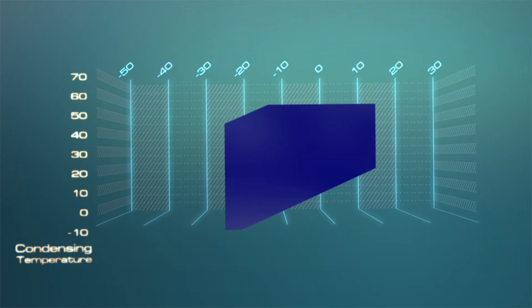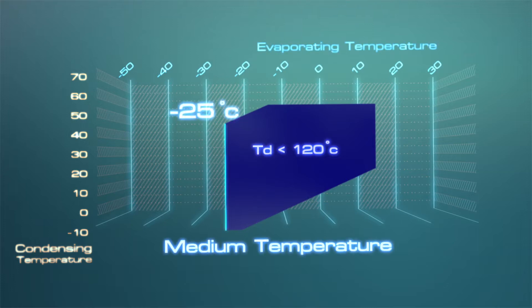The medium temperature compressor is able to reach the lowest evaporating temperature of minus 25 degrees Celsius, under the circumstances stated by the terms of reference, while controlling the temperature of discharge pipe.